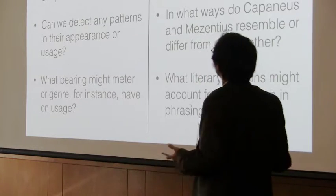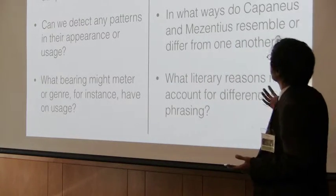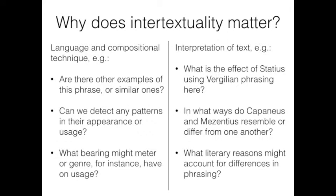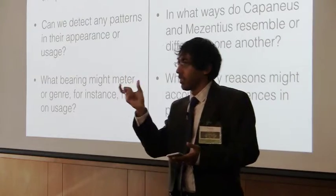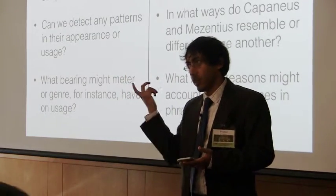But as literary critics, we also think intertextuality matters, because we want to know what the effect is of Statius using Virgilian phrasing. Why is he using this phrase? In what ways do these two characters resemble or differ from one another? Is there a way in which intertextuality can help us think about a particular text as a locus for similarity or difference? What literary reasons might account for differences in phrasing?